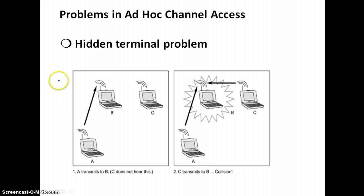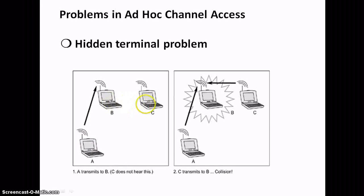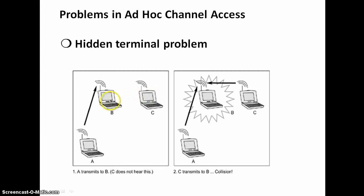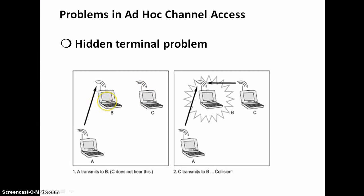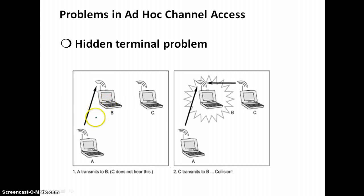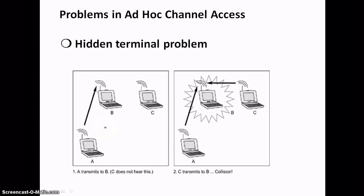First is a hidden terminal problem. A and C cannot hear each other. A sends to B and C cannot receive A. C wants to send to B. C senses free medium. Collision occurs at B. A cannot receive collision. A and C are hidden from each other. So, it is called hidden terminal problem.